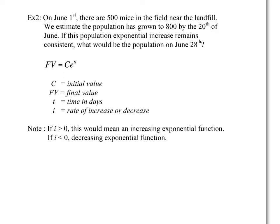So here's an example of where we would find exponentials, or increasing and decreasing functions, with base of e. So on June 1st, there are 500 mice in a field near the landfill. We estimate the population of mice has grown to 800 by the 20th of June. So, if this population exponential increase remains consistent, what would be the population on June 28th? Well, these types of functions use a formula that is modeled here. So the future value, again, we've seen that before as a variable. So FV equals to C, which is the initial value. So very similar to our exponential functions, again, before.